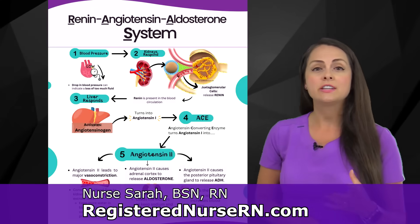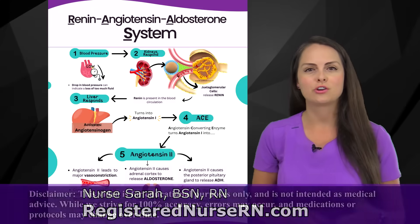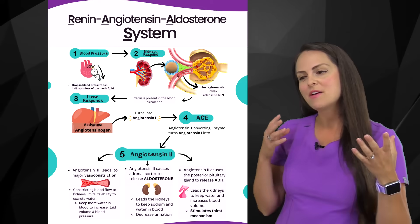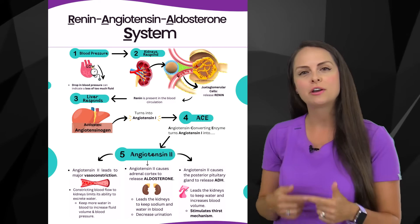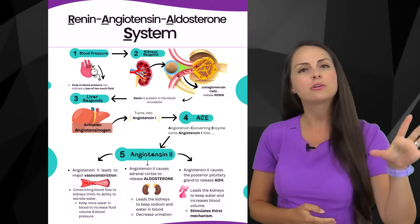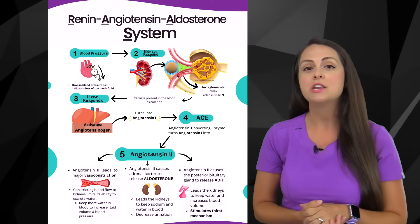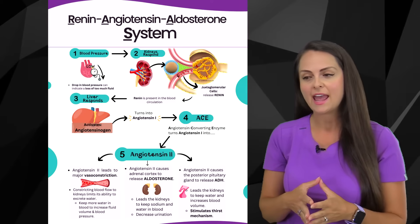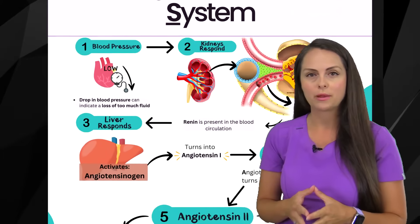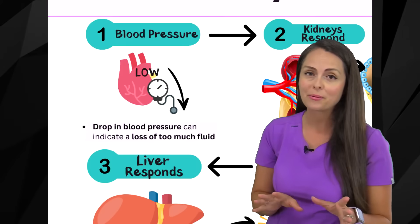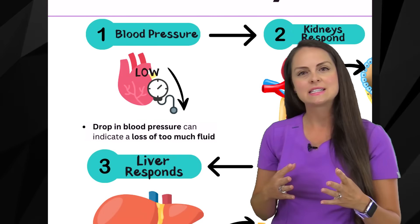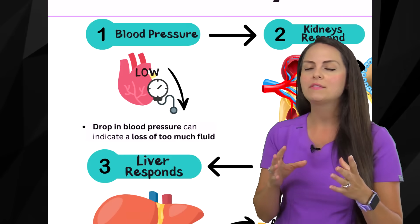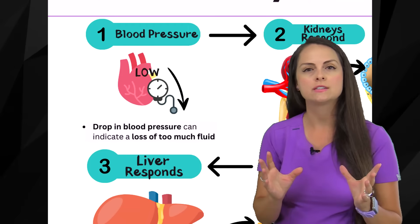Let's review the renin-angiotensin-aldosterone system, also known as RAS. So let's say you have a patient who has fluid volume deficit. Thinking back to our lecture on fluid volume deficit, we know that our patient has low fluid in their body, and this can cause a low blood pressure. Our body doesn't like a low blood pressure, so whenever it senses this, this RAS system is going to kick in. The whole goal of this system is to increase your blood pressure.